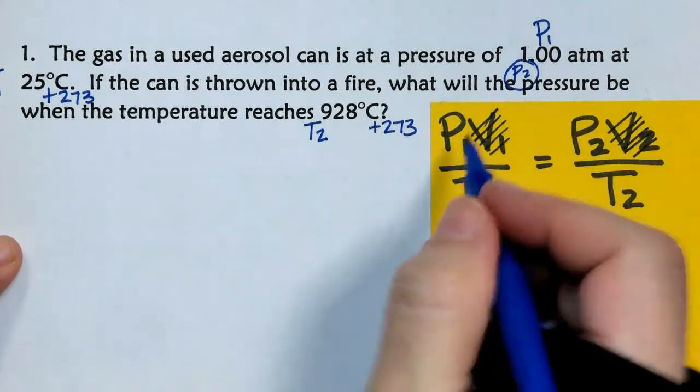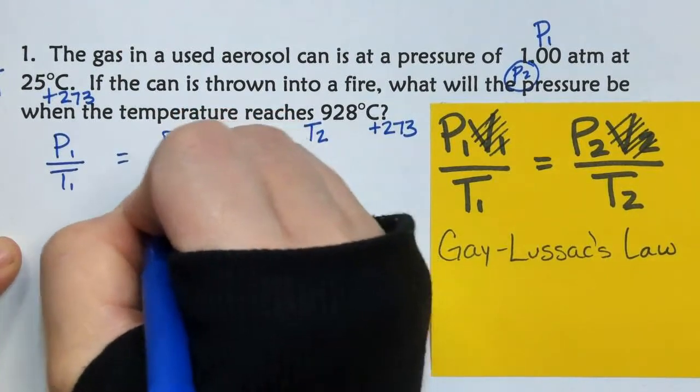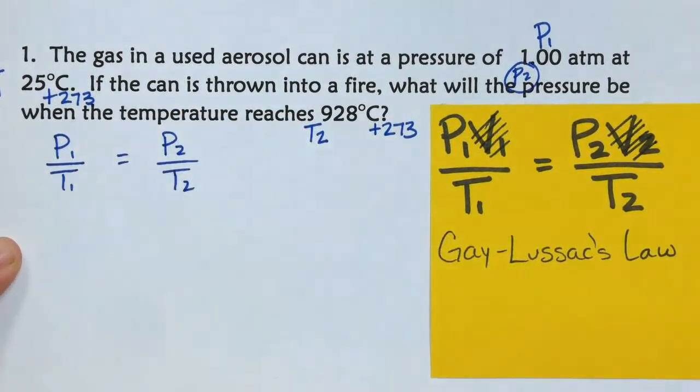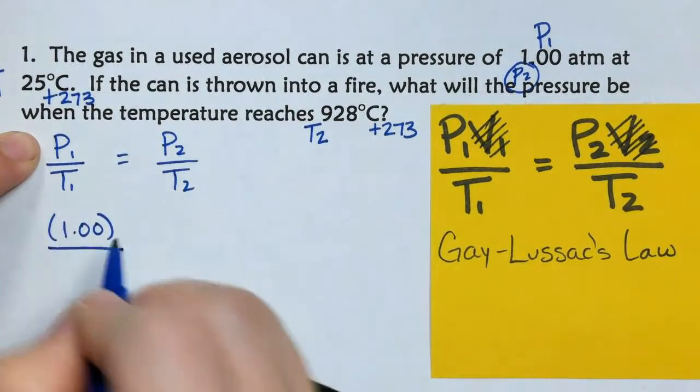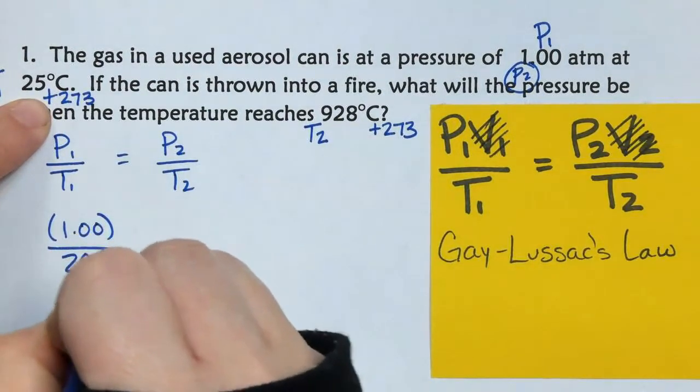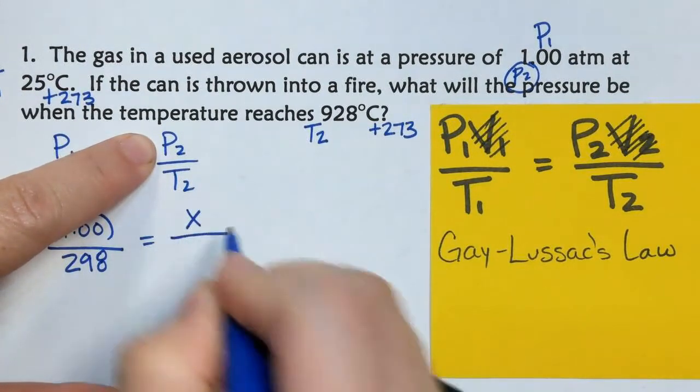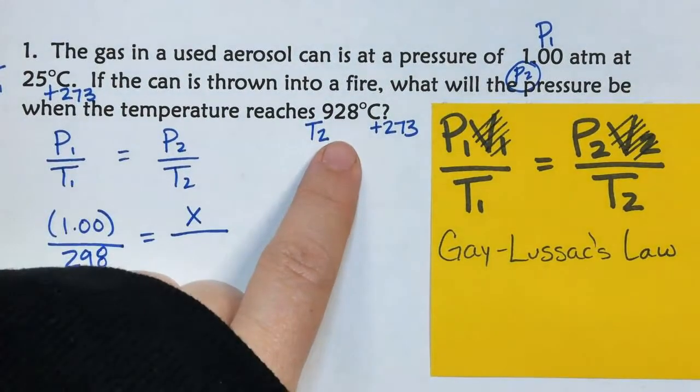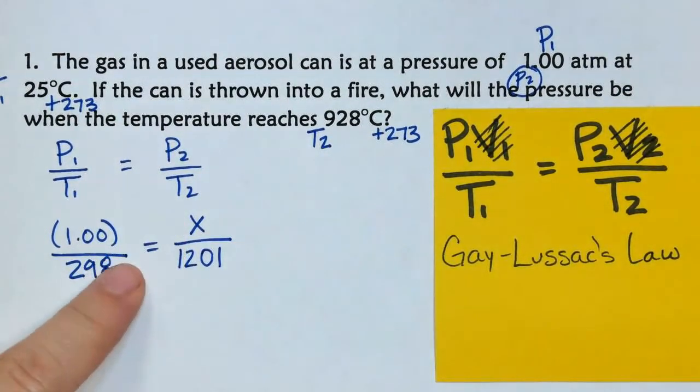So, now I'm going to set up my equation. It's going to be P1 over T1 equals P2 over T2, and so my P1 is 1.00 over my T1 is 25 plus 273, which is 298, equals P2 is what I don't know, so I'm going to call that X, and then put it over 928 plus 273, which is going to be 1201 Kelvin. So now I have my equation set up, I can calculate my answer, and I'm going to use cross multiplication.